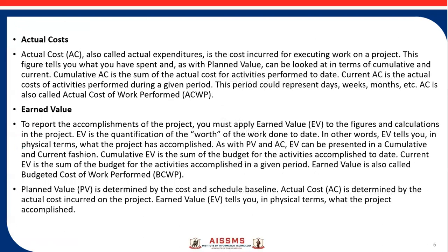Now, actual cost — also known as actual expenditures — is the cost incurred for executing work on a project. This cost will tell you what you have spent. As with planned value, it can be looked at in terms of cumulative and current. Cumulative actual cost is the sum of actual costs for activities performed to date. Current actual cost is the actual cost of activities performed during a given period — days, weeks, months, etc. AC is also called the actual cost of work performed.